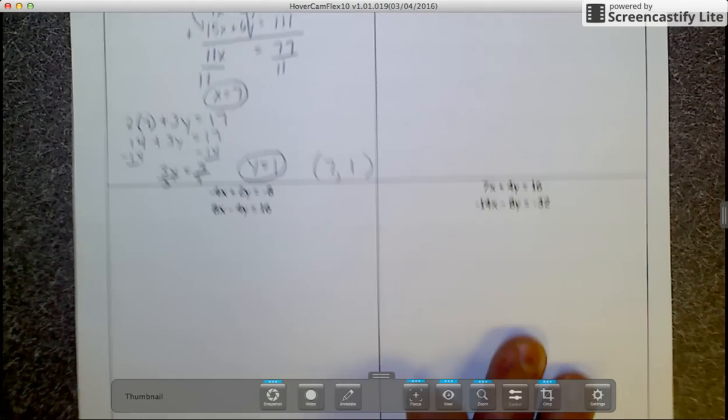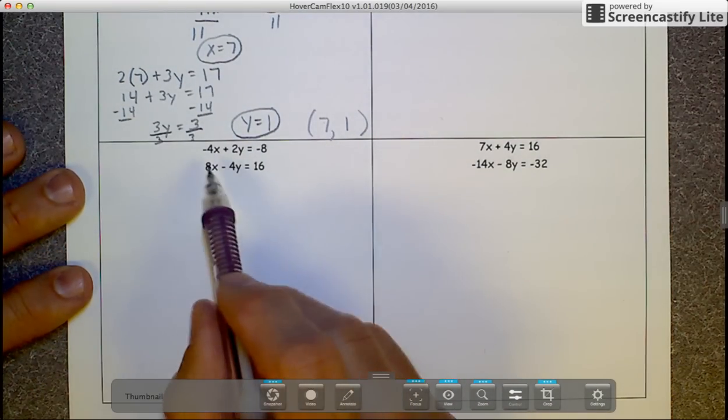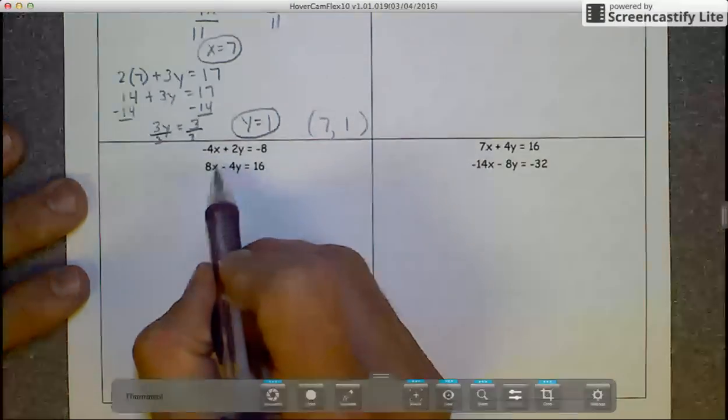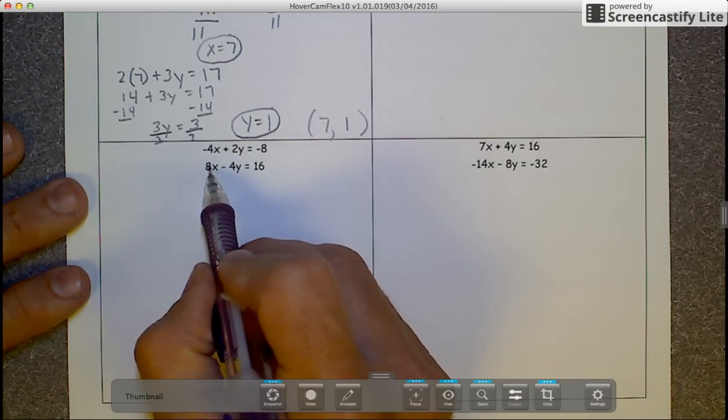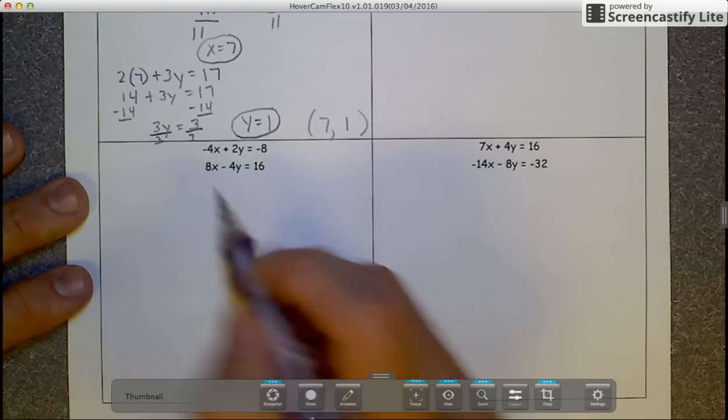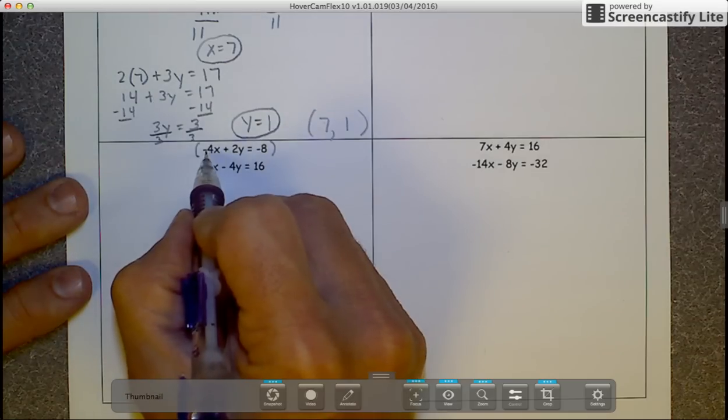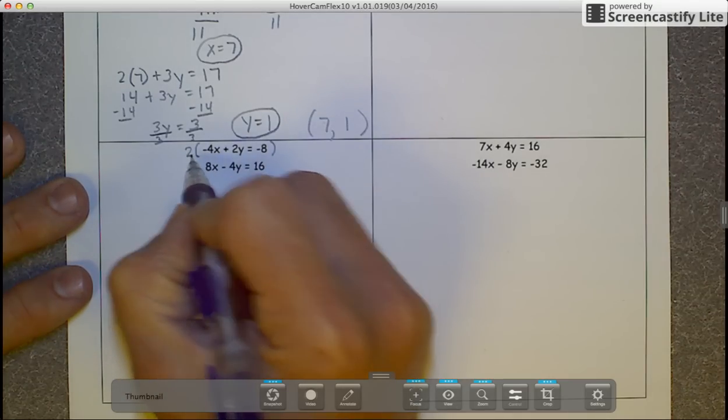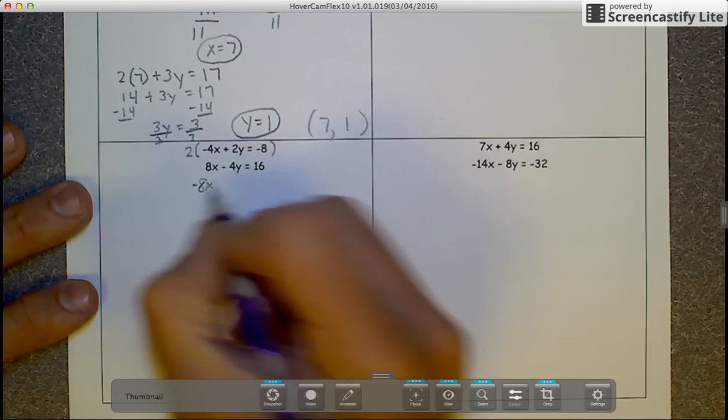As I go to the bottom, I'm going to continue with this one. I have a negative 4 and a positive 8. I noticed that 4 is a multiple of 8, so we can just multiply the top equation. Since the 4 is negative, all I have to do is multiply it by 2, and we're going to cancel out our x values. So you get negative 8x.